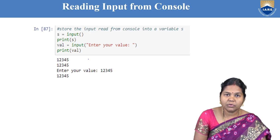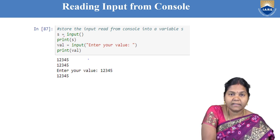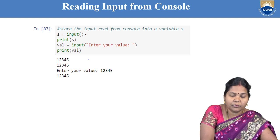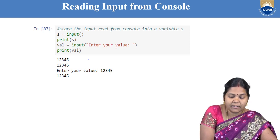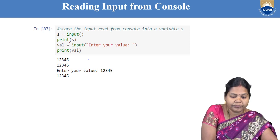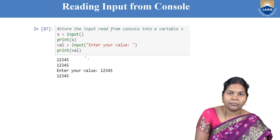If you want to store the input in a variable, you can write, for example, s equal to input method. Whatever input you read from the keyboard will be stored into variable s, and then you can print the value of s. Similarly, with a message, you can write the input method with 'enter your value', and whatever value you give is stored into the variable val and then printed. These are two different ways to read input from the console.